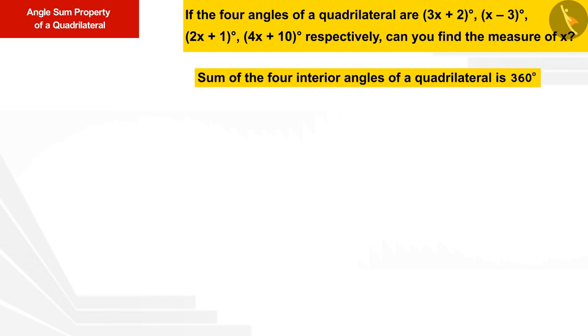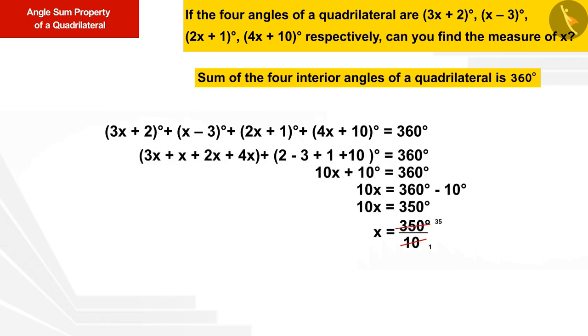So (3x + 2) + (x - 3) + (2x + 1) + (4x + 10) is equal to 360 degrees, which we can write in this way. Solving the equation further gives us a measure of x equals 35 degrees.